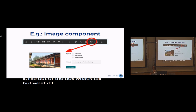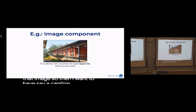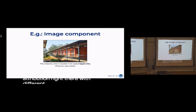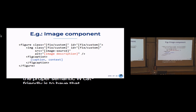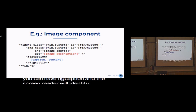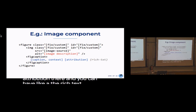But what if I want a more complex description or use for that image? I want to have a caption with formatting, and I want attribution right there with different formatting. The proper semantic, WCAG-friendly approach is to use the figure tag, because then you can have FigCaption. The screen reader will identify it properly — this is a figure and the FigCaption belongs to the image — as opposed to just some random text that comes after the image. You can have attribution there with a rich text environment for that particular caption.